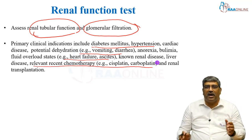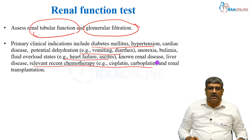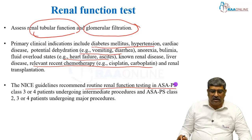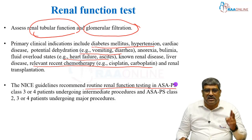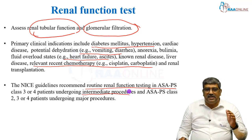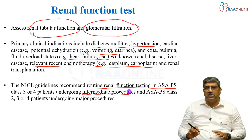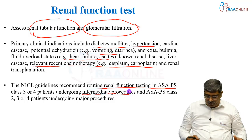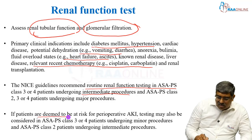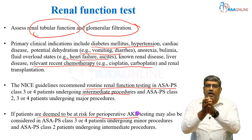Relevant chemotherapy such as cisplatin or carboplatin can affect renal function, as can patients undergoing renal transplantation. The NICE guidelines recommend routine renal function testing in ASA physical status class 3 or 4 undergoing intermediate procedures, and ASA physical status 2, 3, or 4 undergoing major procedures. Any major procedure with ASA physical status 2, 3, or 4 warrants a renal function test. If patients are deemed to be at risk of perioperative acute kidney injury, certain risk factors should be anticipated.